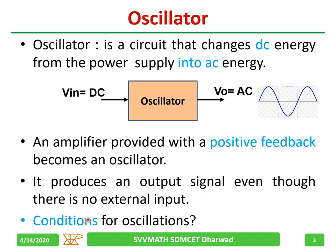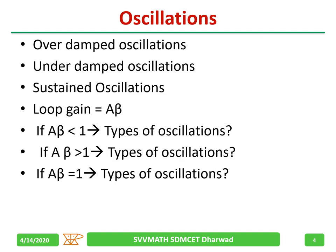Let us recall the conditions for oscillations. You might have heard of over damped oscillations, under damped oscillations, and sustained oscillations. Loop gain is represented by A·β. If A·β is less than 1, which type of oscillations will you get?